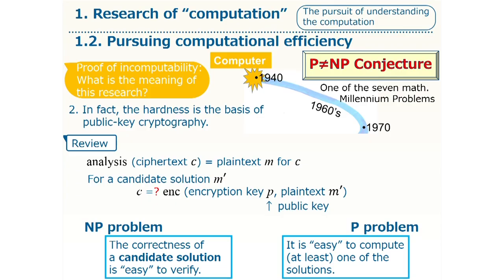To see this, consider that you are given a candidate solution M', that is a candidate of the plain text for the ciphertext C. You can check its correctness by applying encryption to this M' with the encryption key P. Checking it produces the ciphertext that you want to decrypt. Recall that this key P is a public key that is known by everyone. So everyone can check whether M' is correct or not easily. So this is the property of NP problems.